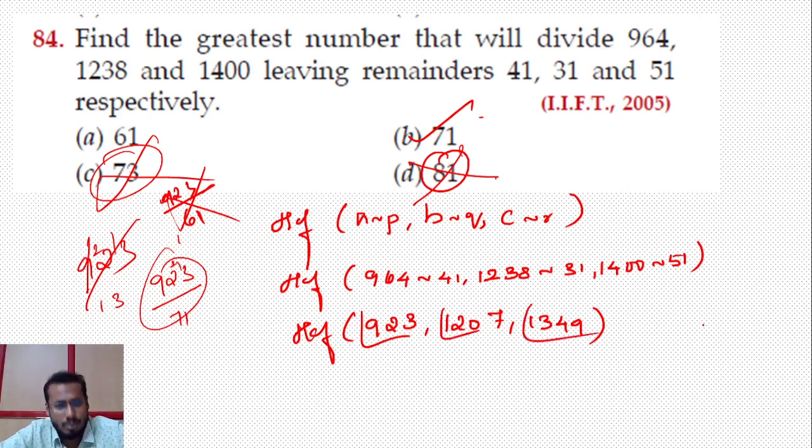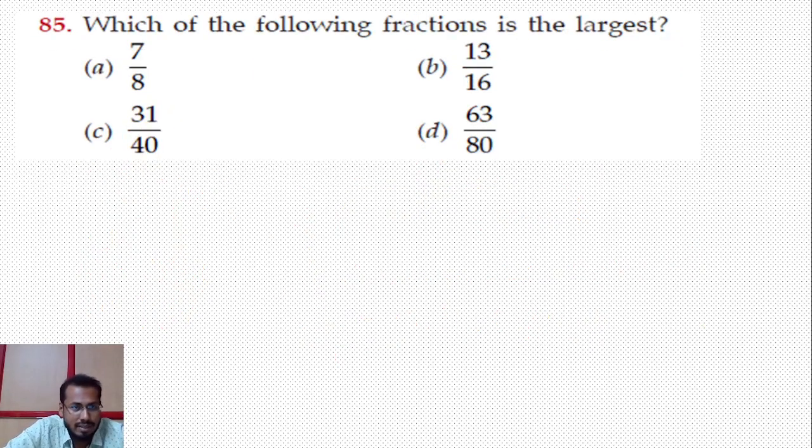So the answer is 71. Either you can take HCF using the usual method or the easiest way is to check from the options. Take one number and divide it - all numbers should be divided by that number. Start from the highest number.